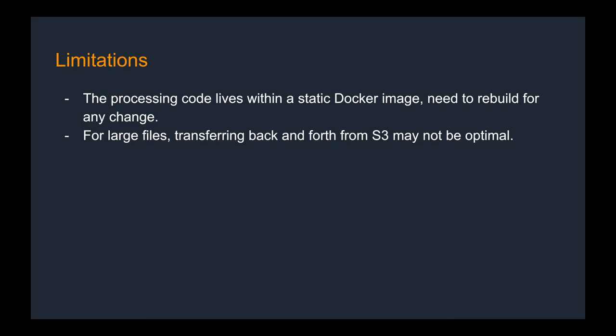There are some limitations with this approach that I want to point out. One is that the processing code lives within a static Docker image. This essentially means every time you make a change to your Python processing script, you need to rebuild the Docker image and push it to ECR and potentially update the version of the image to use in your ECS tasks. Another thing to keep in mind is that we are transferring files to S3, then copying them over to processing containers, and then transferring the results from those containers back to S3. This creates a lot of data transfer, and for large files this may not be optimal in terms of cost.